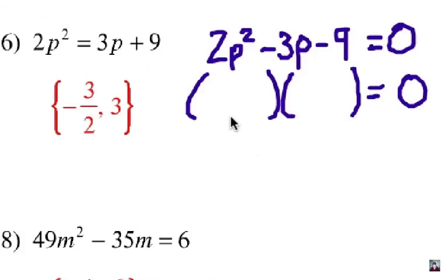Number 6. We're going to subtract 3p from each side and subtract 9 from each side. So here's my quadratic equal to 0. I'm going to factor it. I know that in one binomial, I have to have 2p, in the other I have to have p. And then I need factors of 9 that are going to work. Let's try 3 and 3.